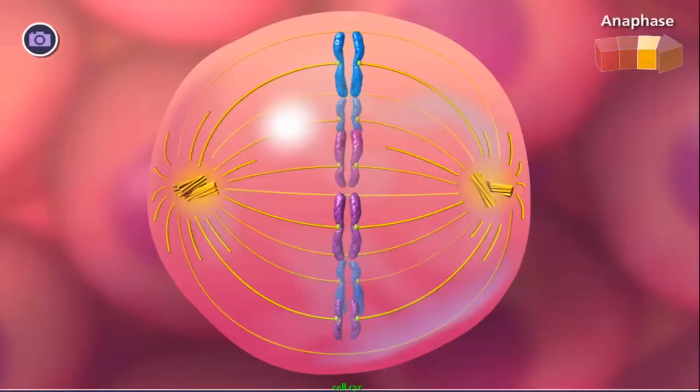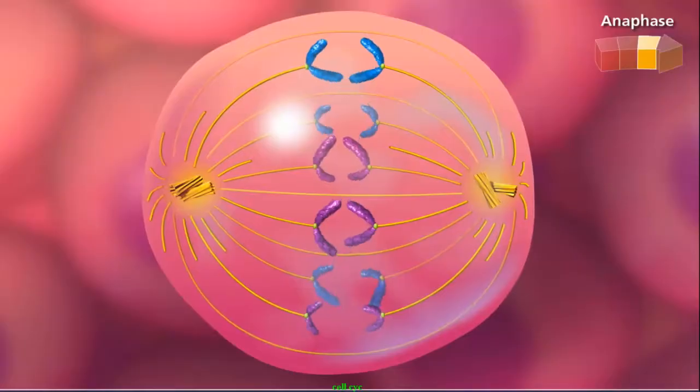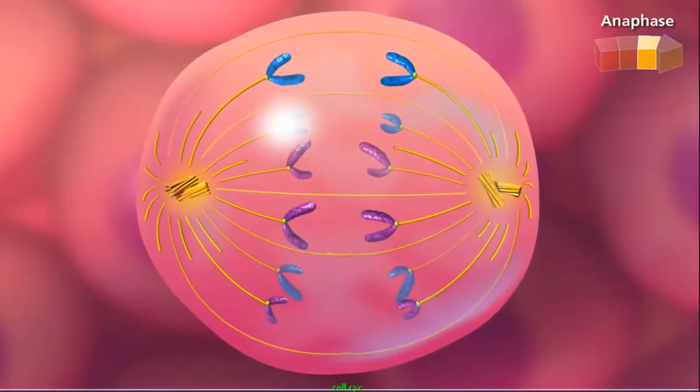Anaphase begins with the degradation of proteins that hold sister chromatids together, freeing individual chromosomes. The free chromosomes are then pulled by their kinetochores to opposite poles.